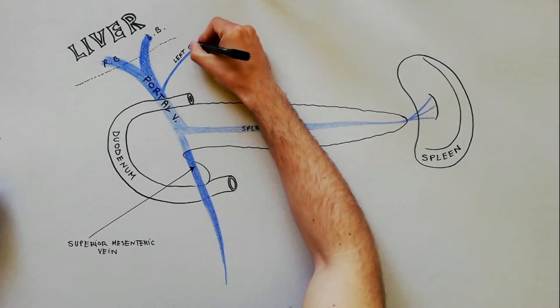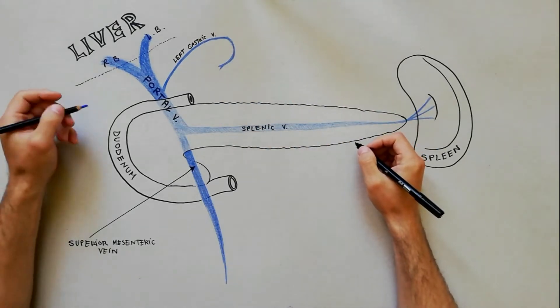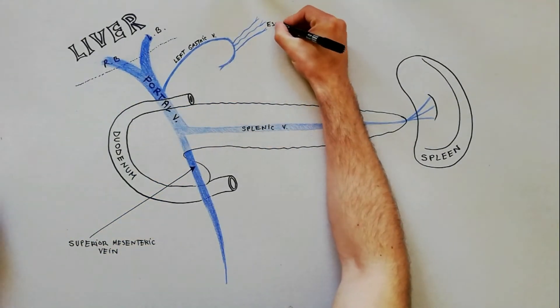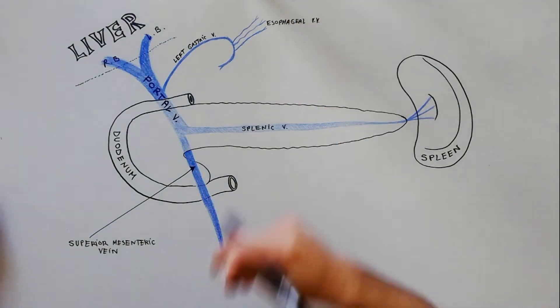The left gastric vein, which in turn drains few small esophageal veins from the abdominal part of the esophagus.